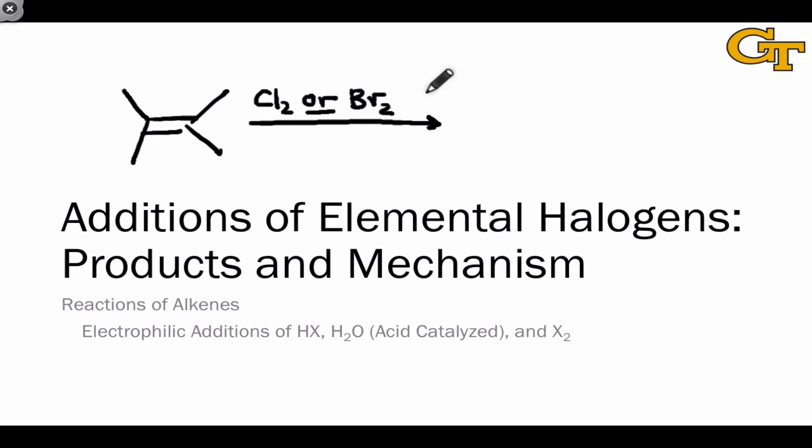The elemental halogens, especially Cl2 or Br2, add to alkenes to give vicinal dihalides. In this reaction, one of the atoms of the elemental halogen acts as an electrophile and the other as a nucleophile.